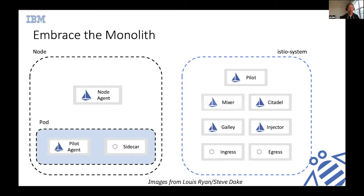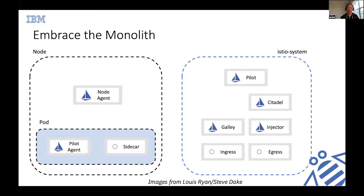We started this journey by removing Mixer — one of the key components — distributing its functionality to the Envoy sidecar proxy. This helped address performance concerns where Mixer was perceived as a single point of failure. All traffic had to travel through Mixer to allow services to communicate, so if Mixer went down, the user's data plane could be impacted. This is why we decided to distribute Mixer functionality to the sidecar proxy.